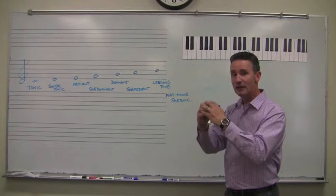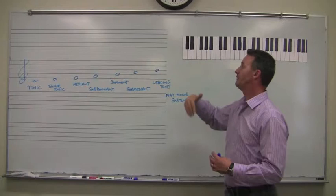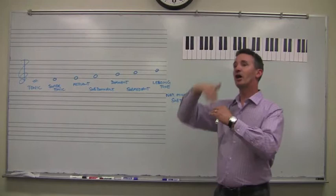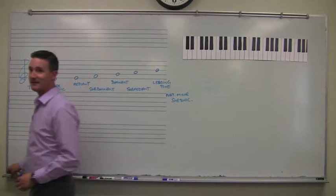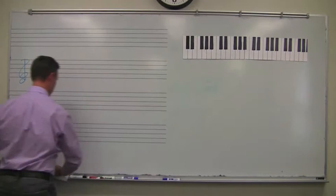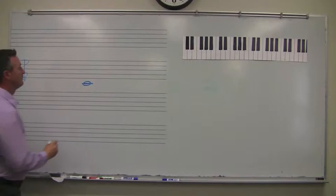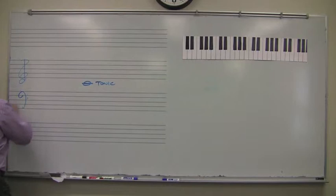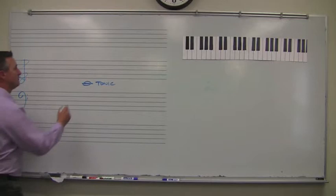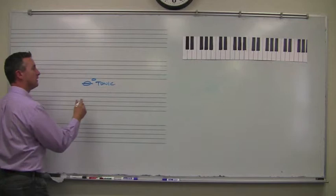The names come from instead seeing the tonic as a center, and then the other names, supertonic and subtonic, and mediant and submediant, and dominant and subdominant, as above and below the tonic. So, it makes much more sense if you write it instead this way. We put the tonic in the middle, and it kind of resides right in the middle.